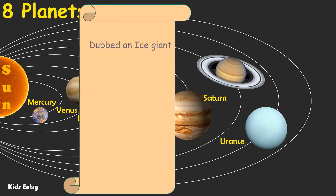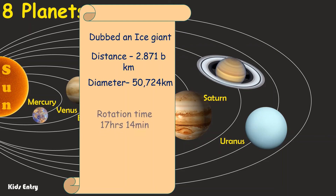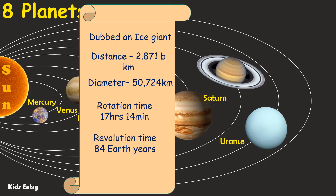Uranus: it is the lightest among the outer planets and this planet is often called an ice giant. Distance from the Sun to Uranus is 2.871 billion kilometers. Its diameter is 50,724 kilometers. One day on Uranus lasts 17 hours, 14 minutes. One year on Uranus lasts 84 Earth years. It has 27 moons.